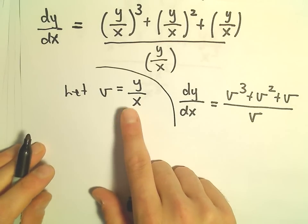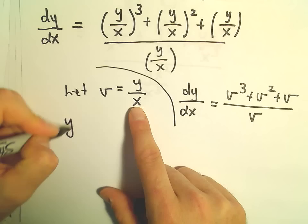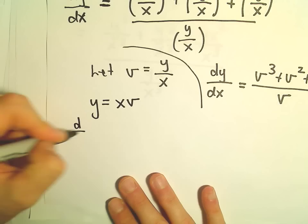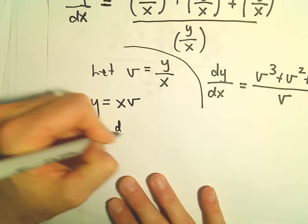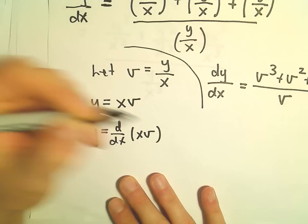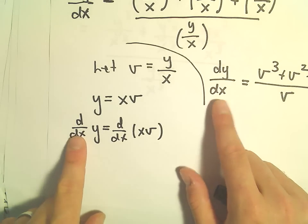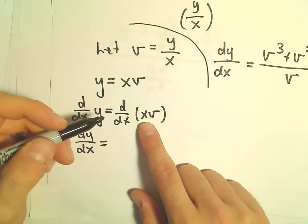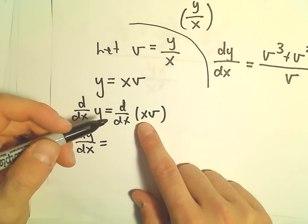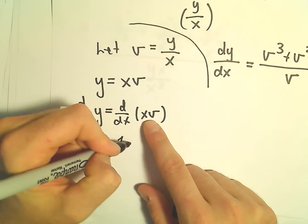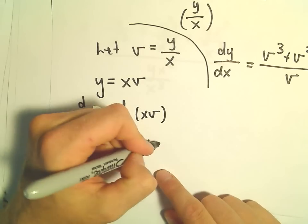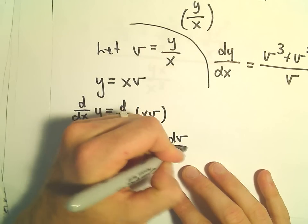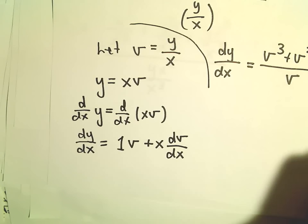The other thing we're going to do is take the equation and multiply by x, giving us y equals x times v. We're going to take the derivative with respect to x of both sides. On the left side we have dy/dx. On the right side we use the product rule: the derivative of x is 1, leaving v, plus x times dv/dx.